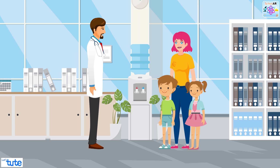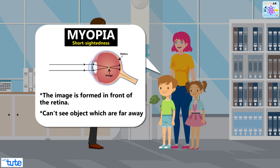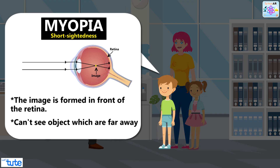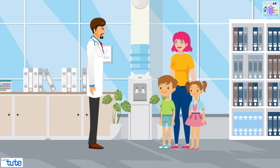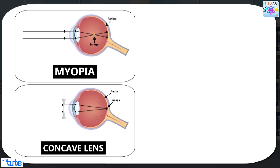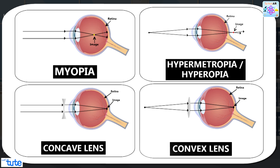The doctor said, don't worry. Jim is having short-sightedness, that is myopia, and Jackie is suffering from long-sightedness, that is hypermetropia or hyperopia. In order to correct it, we will have to make use of concave and convex lenses.